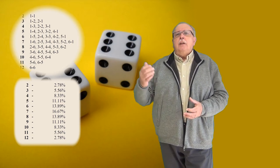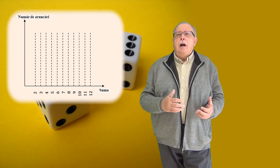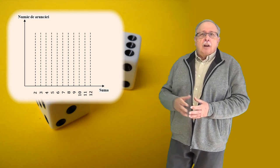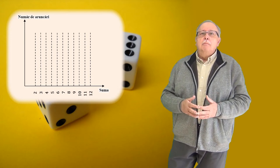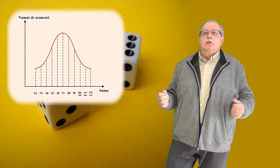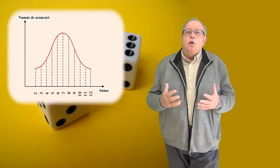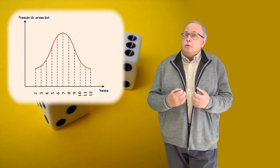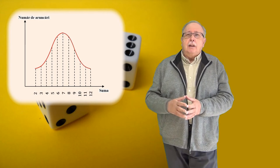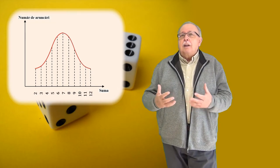Și acum, după ce am aruncat zarurile de foarte multe ori, să reprezentăm grafic numărul de aruncări în funcție de suma care a căzut, așa cum profesorul a reprezentat numărul de chifle în funcție de masa lor. Dacă obținem acest grafic, totul este în regulă. Cel mai des cade suma 7, deoarece se poate obține prin cele mai multe combinații, iar forma de clopot ne arată că avem o distribuție normală. Acest grafic ne arată că zarurile sunt cinstite, adică probabilitatea de a cădea pe o față este aceeași cu probabilitatea de a cădea pe oricare altă față, și că datele sunt complete și n-au fost alterate.